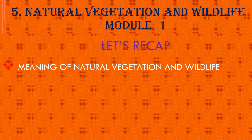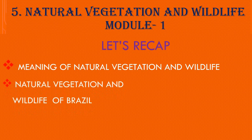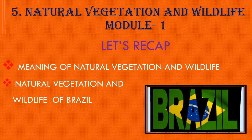Natural vegetation does not need help from humans and gets whatever it needs from its natural environment. We also studied about wildlife. Wildlife refers to undomesticated animal species, but has come to include all organisms that grow or live in an area without being introduced by humans — so in wildlife, human interference is not there. Wildlife plays an important role in balancing the environment. We also studied about natural vegetation and wildlife in Brazil.